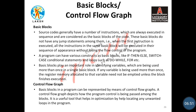Basic blocks play an important role in identifying variables that are being used more than once in a single basic block. If any variable is being used more than once, the register memory allocated to that variable need not be emptied unless the block finishes execution. A control flow graph depicts how the program control is being passed among the blocks. It is a useful tool that helps in optimization by helping locate any unwanted loops in the program.